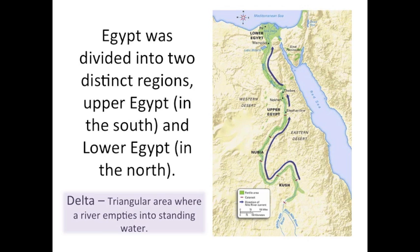Egypt is divided into two distinct regions: Upper Egypt in the south and Lower Egypt in the north. Lower Egypt includes the delta area where the Nile empties into the Mediterranean. Now this might seem backward, but remember the Nile River flows north, so Upper Egypt is up river from Lower Egypt.